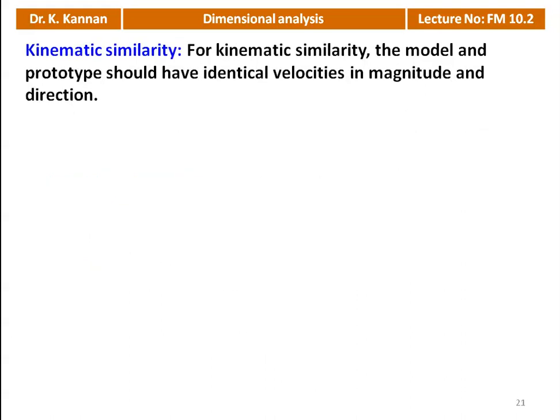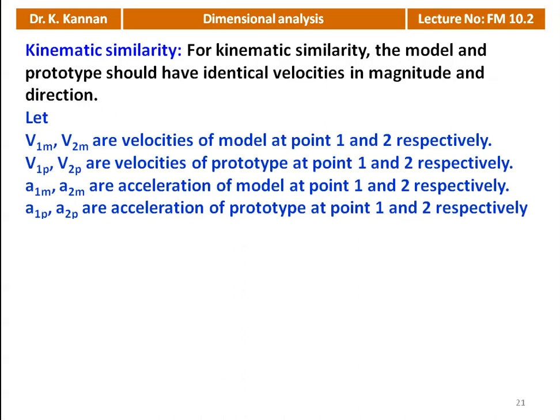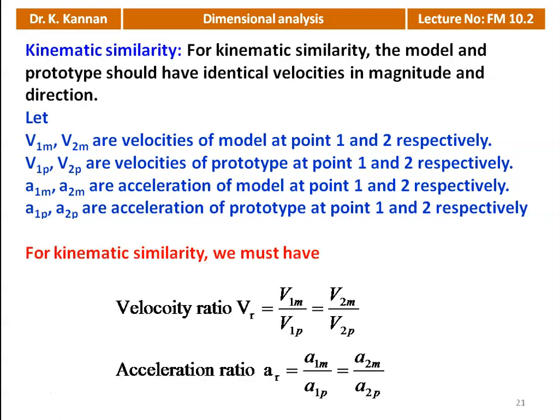For kinematic similarity, the model and the prototype should have identical velocities in magnitude and direction. Let V1m and V2m be the velocities of the model at points 1 and 2, and V1p and V2p be the velocities of the prototype. A1m, A2m are accelerations of the model and A1p, A2p are accelerations of the prototype. The conditions are: V1m/V1p = V2m/V2p and A1m/A1p = A2m/A2p.